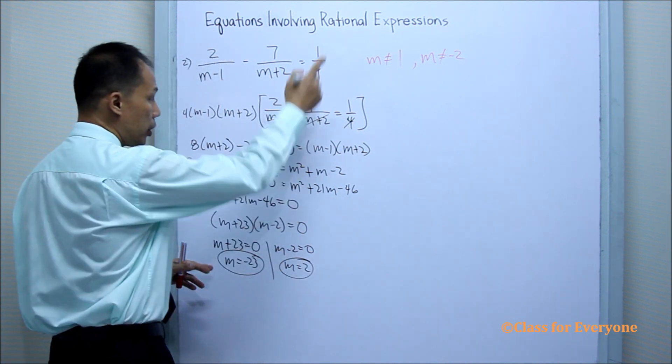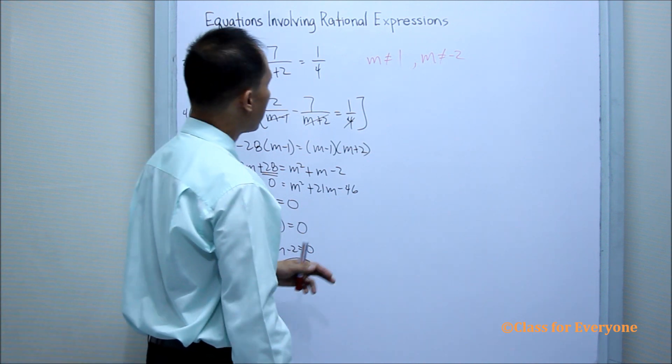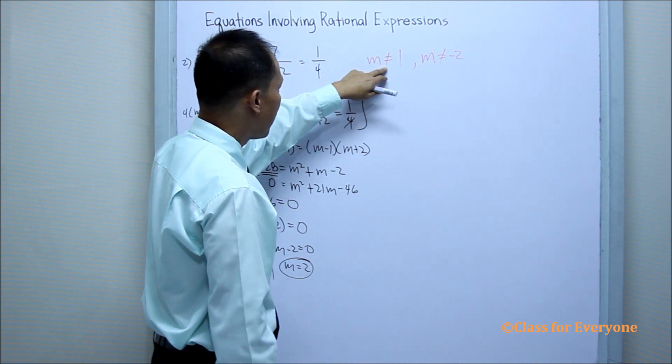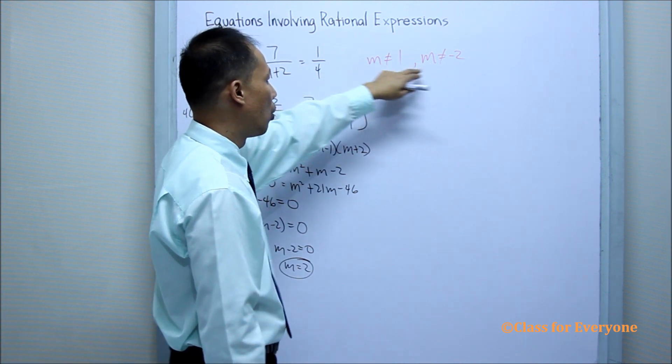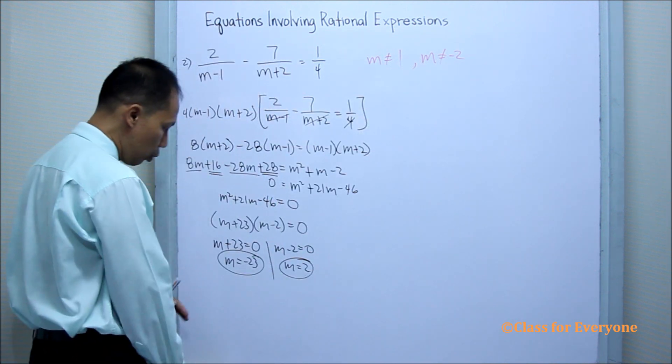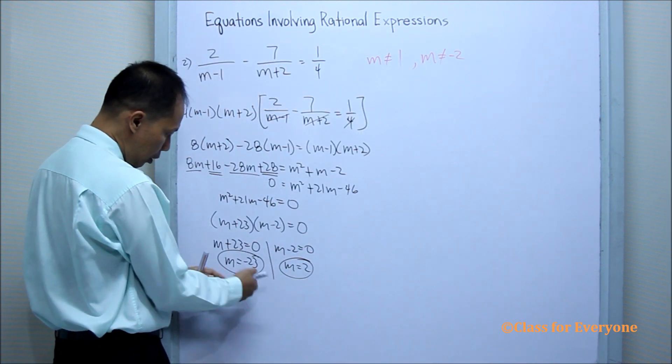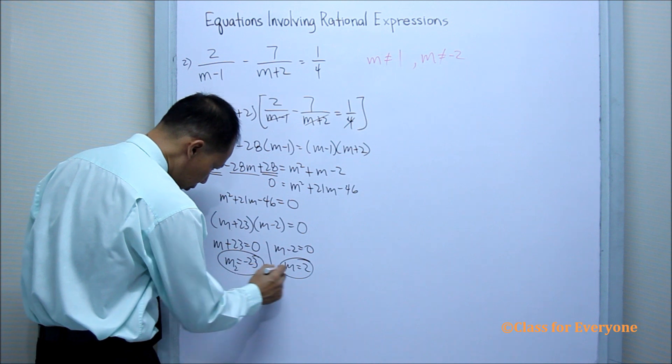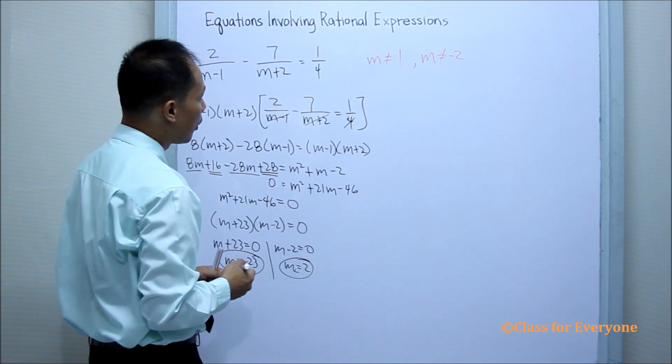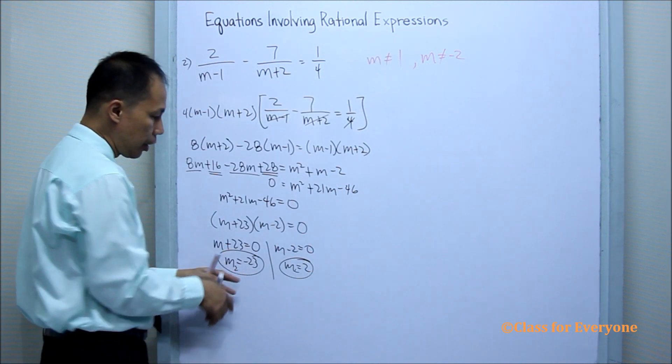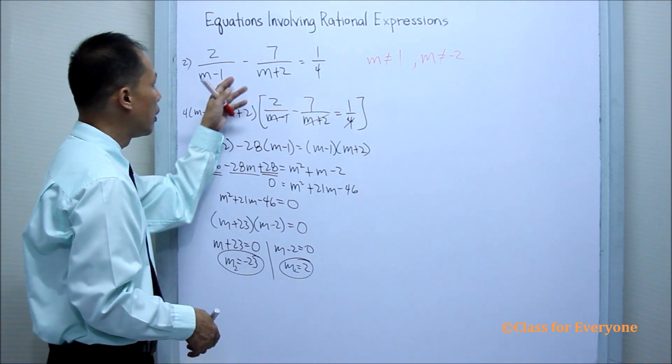Let's check the restriction. The restriction is that it should not be negative 1 or it should not be negative 2. The two values of m is neither of them. So, these are the solution set of the rational equation.